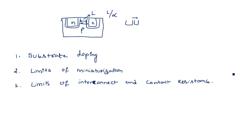In this video I am continuing the limitations on scaling. In the previous video I discussed limits on substrate doping, indicated by Nb, which decides the doping concentration to make it p-type or n-type. There is a direct relation between doping concentration and the depletion region. Increasing Nb reduces the depletion region, but it also increases the built-in potential, which in turn increases the depletion region again. This compromise means the depletion region has a limit of 1.3 × 10¹⁹ per cm³.